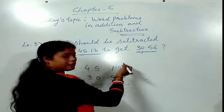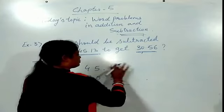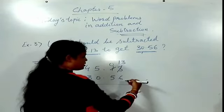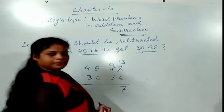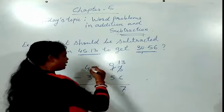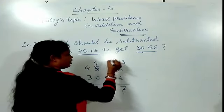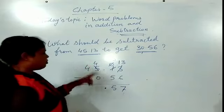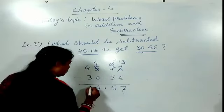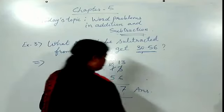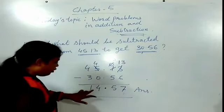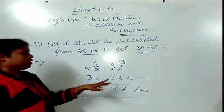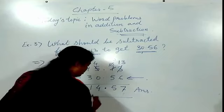45.13 minus 30.56. Now, 3 is lesser than 6, so we borrow 1 — this 3 becomes 13, and this 1 becomes 0. 13 minus 6 is 7. Now 0 is lesser than 5, so we borrow again — it becomes 10. 10 minus 5 is 5. Decimal point. 4 minus 0 is 4. 4 minus 3 is 1. So when we subtract 14.57 from 45.13, we get 30.56. So the answer is 14.57.